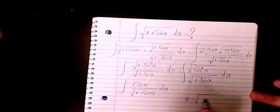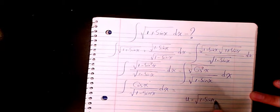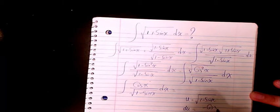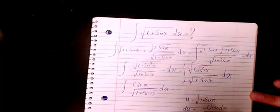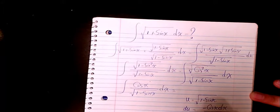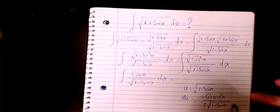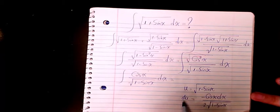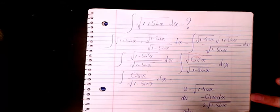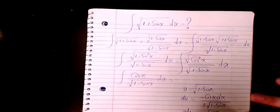du will be negative cosine x dx divided by two square root of one minus sine x. If I can write it like two du or negative two du, that's going to be exactly like cosine x over square root of one minus sine x.